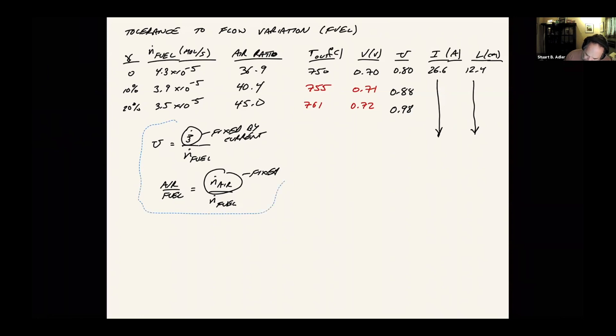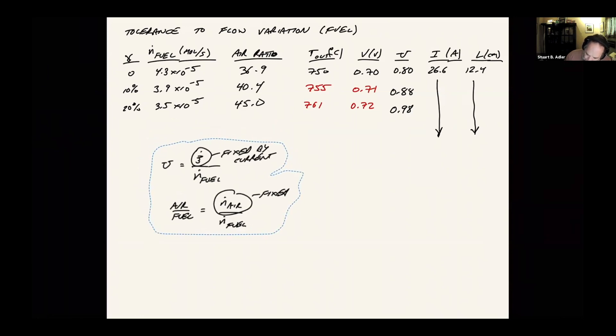So not that dramatic really. It's pretty tolerant to fuel flow variation. Not a problem. But let's say we try 30%. This is now less than 3.5 times 10 to the minus 5 moles per second. This is greater than 45. And our utilization goes over 100%.